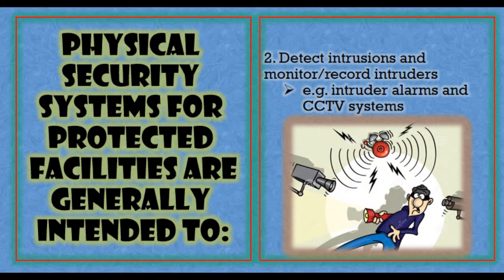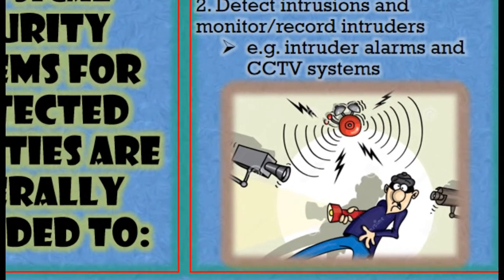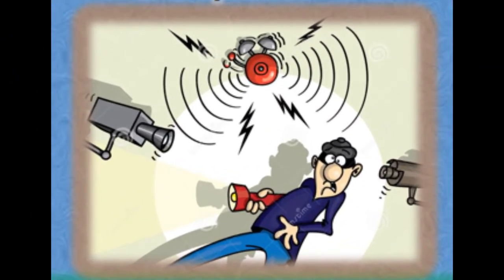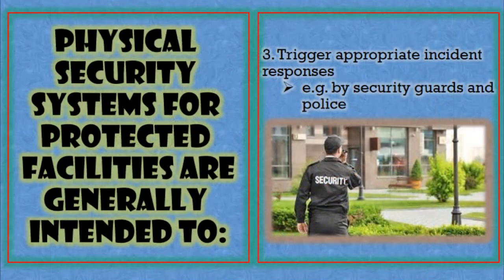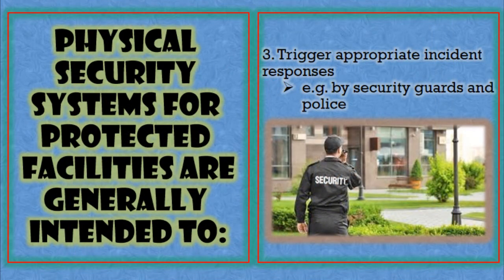Second, to detect intrusions and monitor and record intruders — through intruder alarms or CCTV cameras. For example, vibration sensors installed in building exterior walls can detect if an intruder is trying to enter by destroying walls. When the sensor detects vibration, it initiates an alarm so we know something is going on at the building exterior.